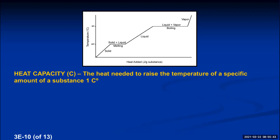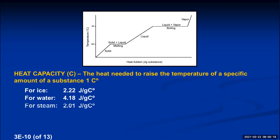For ice, the heat capacity is 2.22 J/g·°C. For liquid water, it is 4.18 J/g·°C (sometimes written 4.184). For steam, it is 2.01 J/g·°C. These values are used to calculate how much heat it takes to warm ice, water, or steam from one temperature to another.